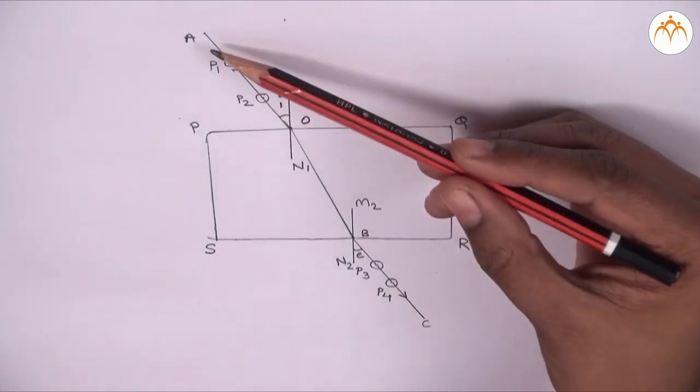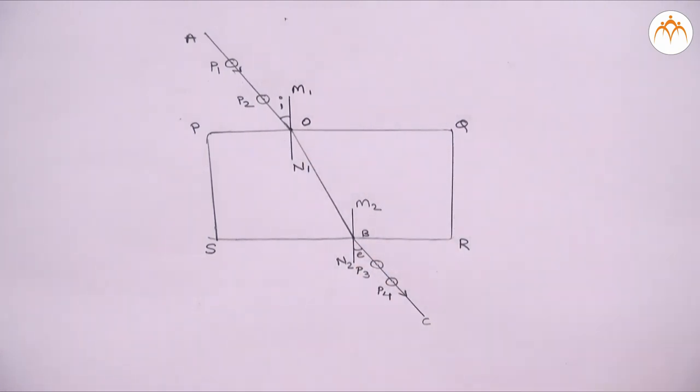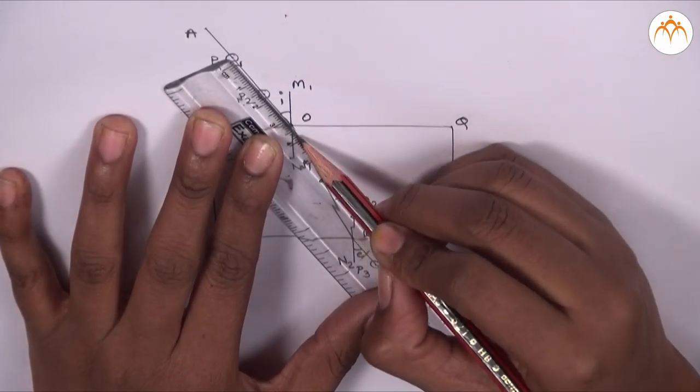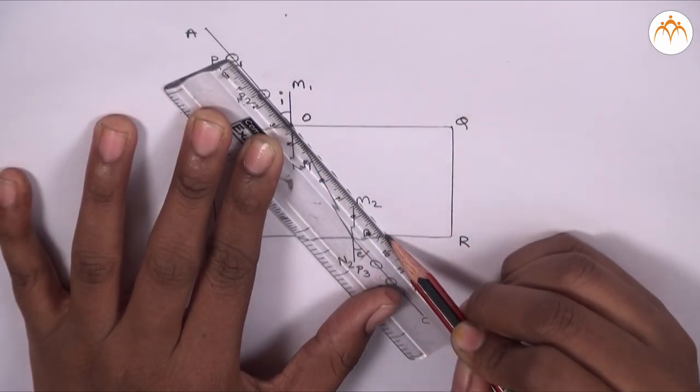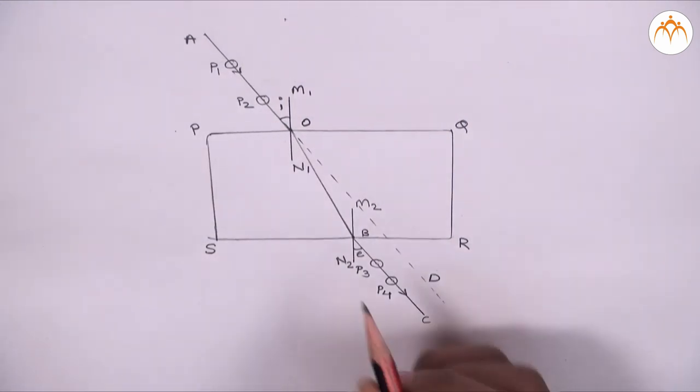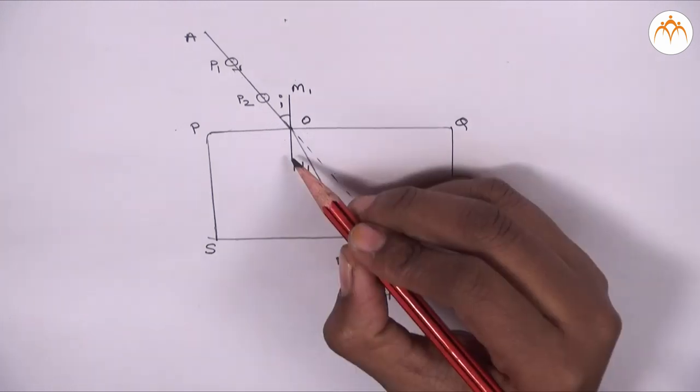Now we have light ray passing through glass slab such that its path is indicated by AOBC. We have extended ray AO in the glass slab with dotted lines as if there were no glass slab. Let us call it ray OD.